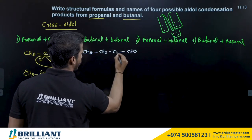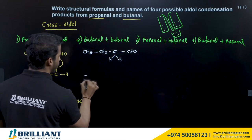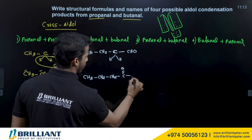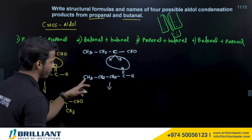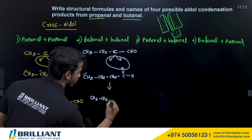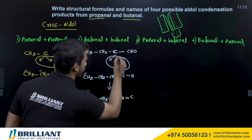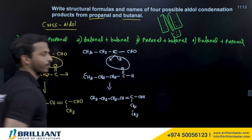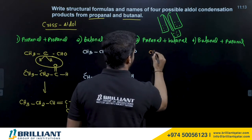For butanol + butanol: butanol is CH3CH2CH2CH2CHO. Writing the alpha carbon hydrogens below and the aldehyde oxygen of the second molecule above, then eliminating water, gives CH3CH2CH2–CH=C(CH2CH2CH3)–CHO, with an ethyl group on each side of the double bond.